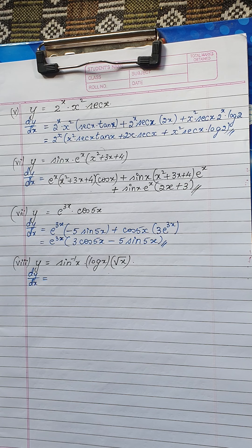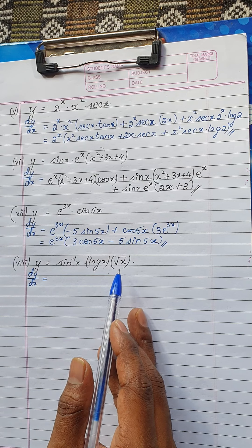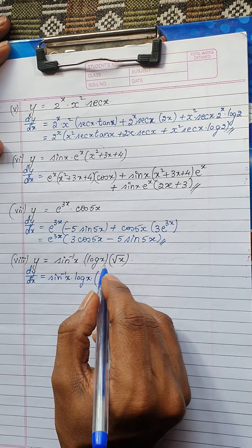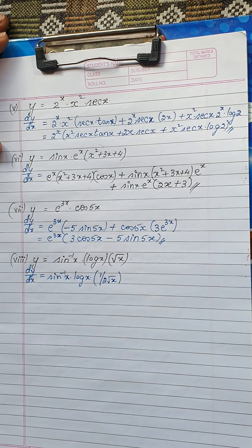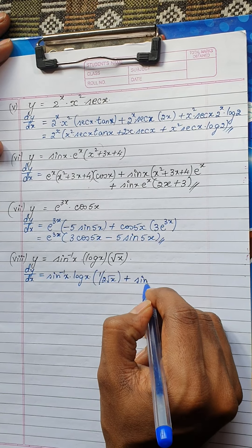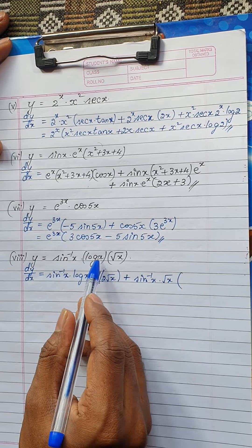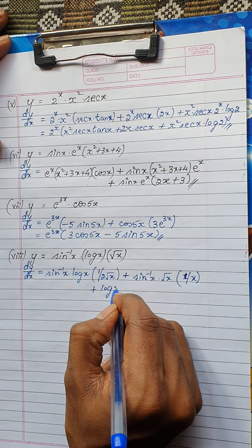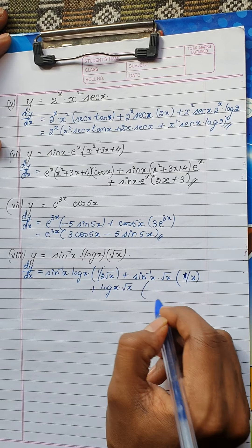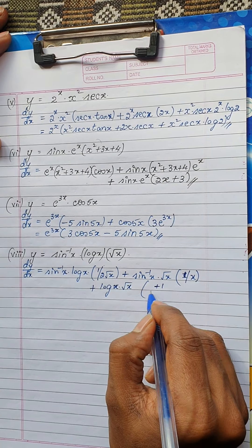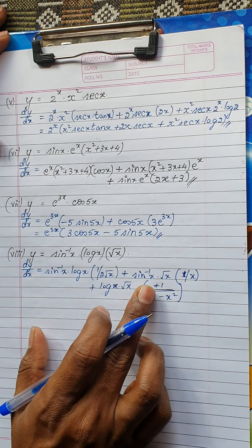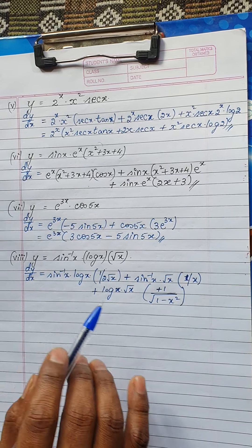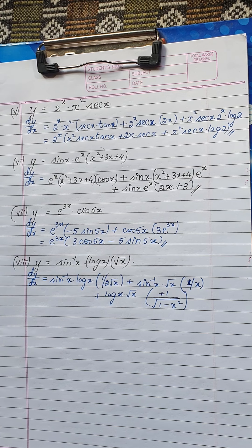Next: y = sin⁻¹x·log x·√x — three functions. Keep sin⁻¹x·log x as it is and differentiate √x, giving 1/(2√x). Plus keep sin⁻¹x as it is and differentiate log x, giving 1/x, with √x kept as it is. Plus keep log x·√x as it is and differentiate sin⁻¹x, which is 1/√(1−x²). This is how you find the derivative when functions are in a product of three.